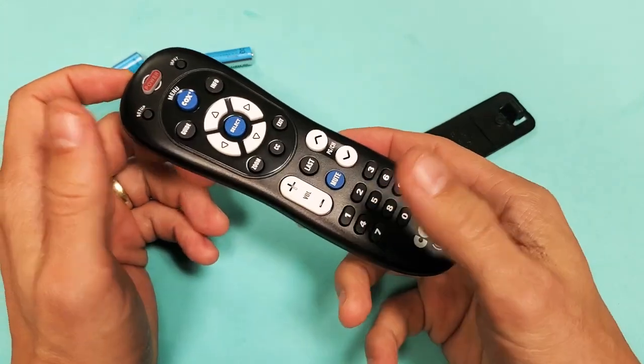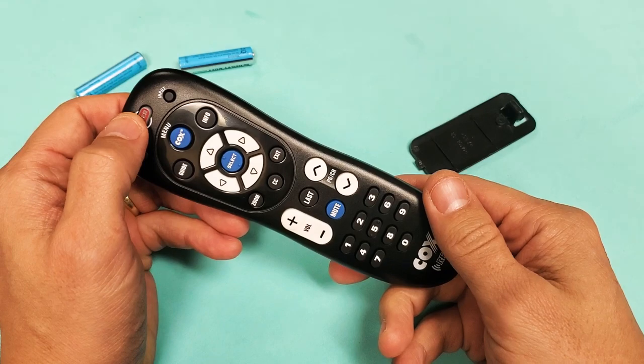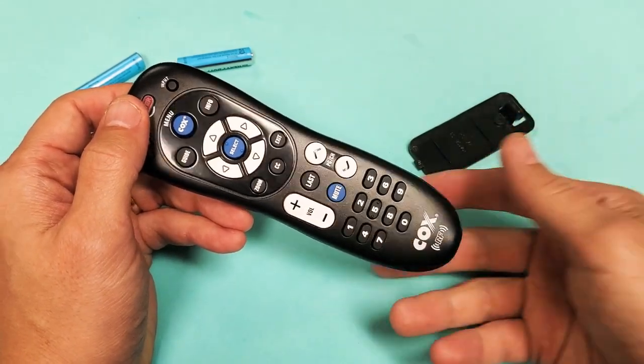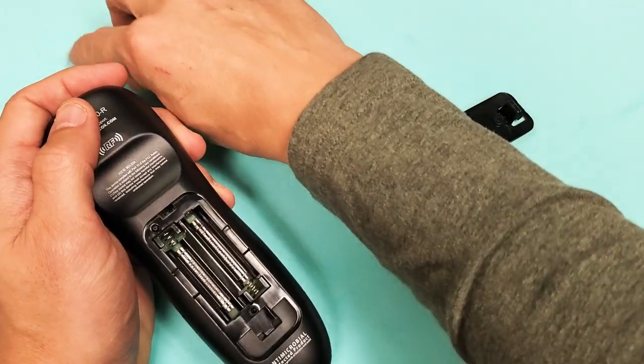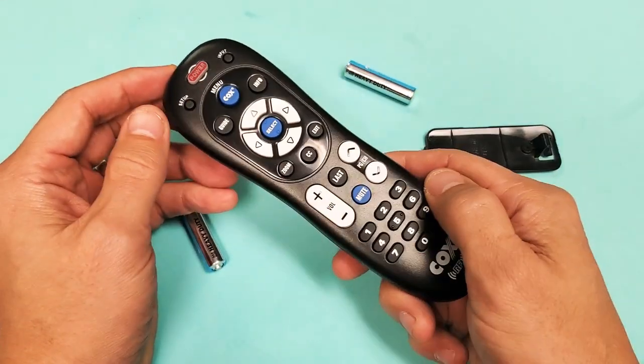If your remote is still down, give this method a few more times. Again, take out the batteries, hold down the power button for 30 seconds. Try it for a few more times. If it's still not working, the last thing I want you to try is just go ahead and try a new pair of batteries. Pop them in there and see if that works.